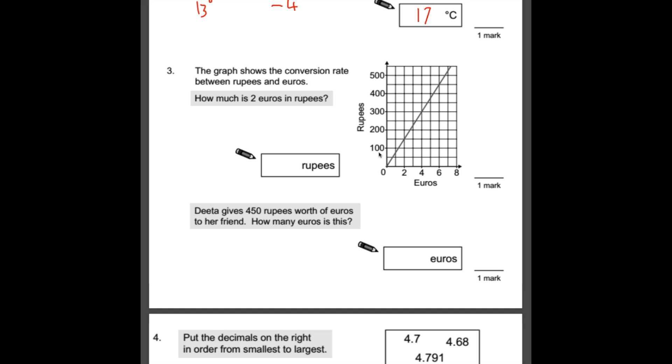Number 3, the graph shows the conversion rate between rupees and euros. How much is 2 euros in rupees? So what we need to do is look at the graph, find 2 euros, it's there. Work our way up, and have a look. How many rupees is that worth? Well, it's slap bang in between 100 and 200. So the number you should know in between 100 and 200 is 150. So that is your answer there, 150 rupees.